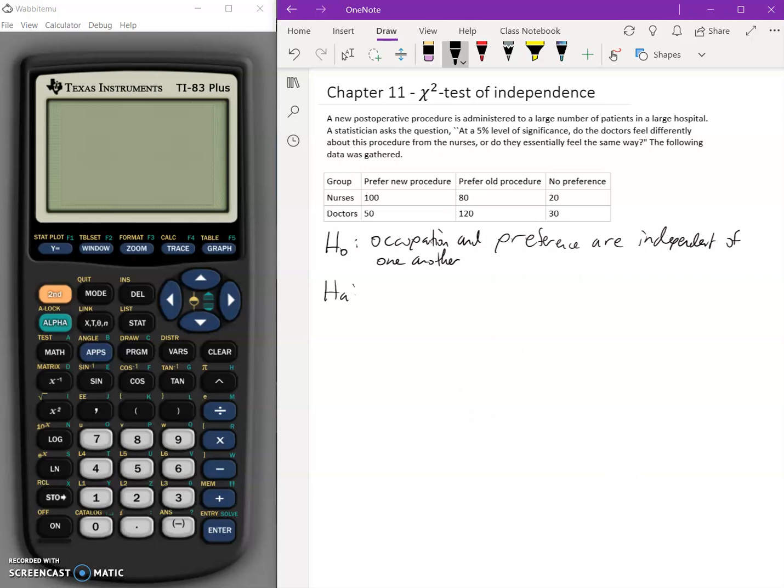But our alternative says, wait a minute, maybe there is some type of dependence here. So our alternative is the occupation and the preference, the preference of the procedure are dependent. So they are dependent on one another.